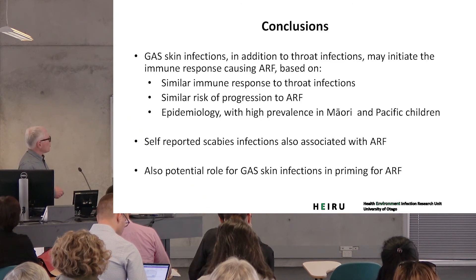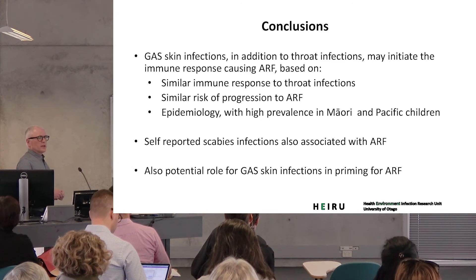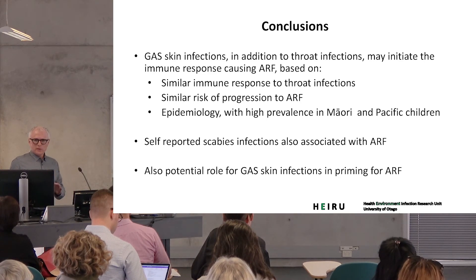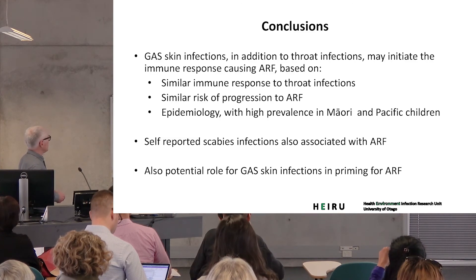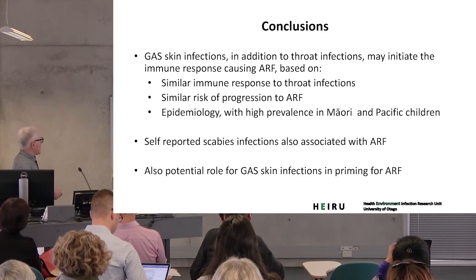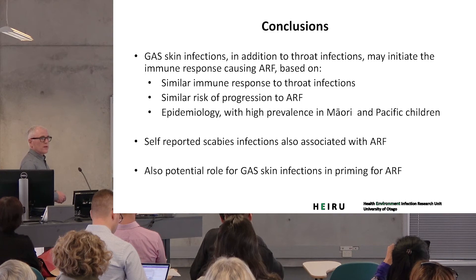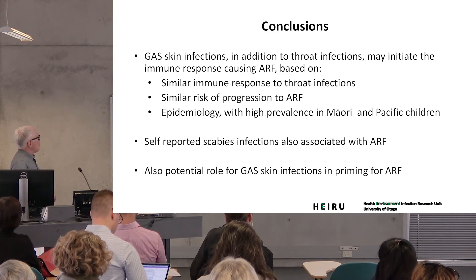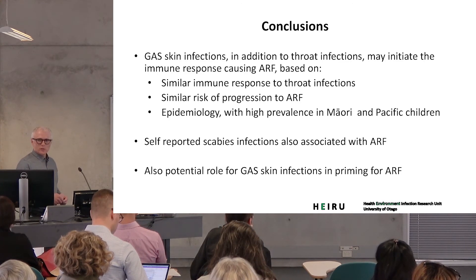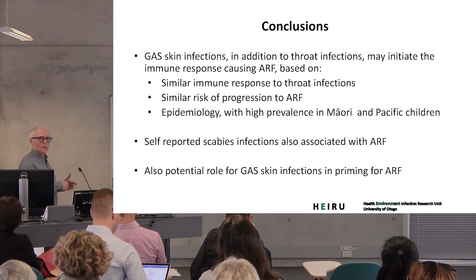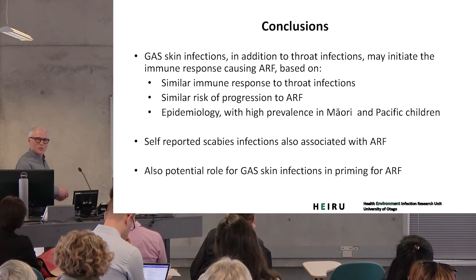Putting all this together, there is a pretty convincing argument that GAS skin infection is important in the development of ARF in New Zealand. There is also an association with scabies independent of other infections. We don't know the relative importance of priming exposures versus acute exposures — most of the data presented here is about consequences of acute exposure, but priming is something that's very hard to measure and would require a very intensive longitudinal study.